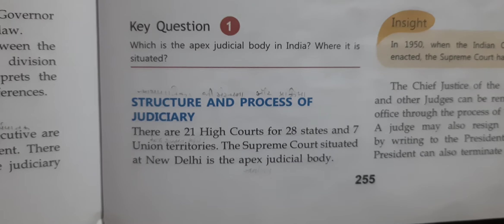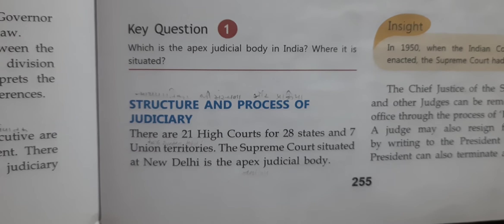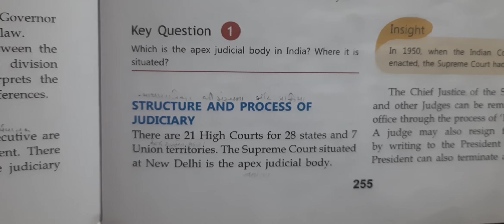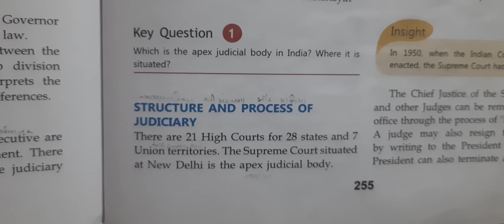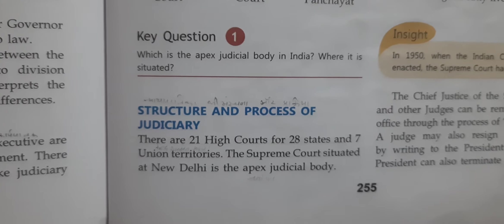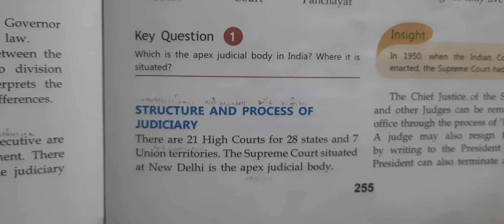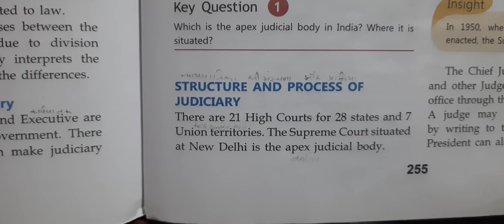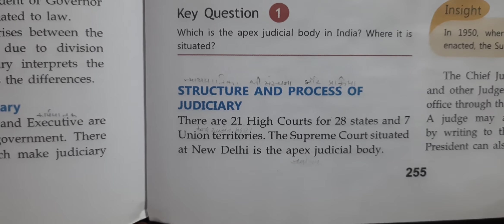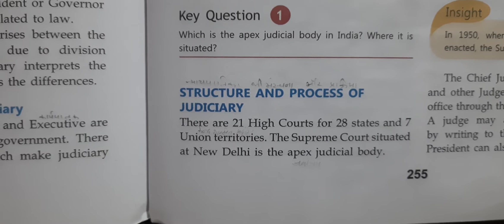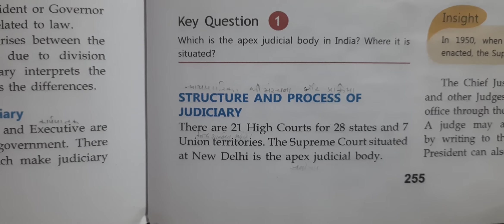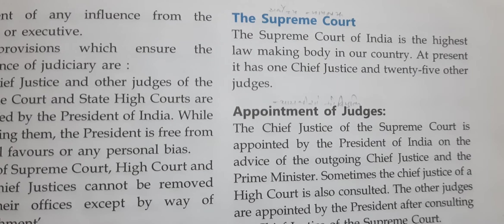Structure and Process of Judiciary — न्यायपालिका की संरचना और प्रक्रिया। There are 21 High Courts for 28 states and 7 union territories. The Supreme Court situated in New Delhi is the apex judicial body. यहाँ पर 28 राज्यों के लिए 21 High Courts हैं और साथ में 7 केंद्रशासित प्रदेश हैं। Supreme Court जो है वो New Delhi में स्थित सर्वोच्च Judiciary Body है।